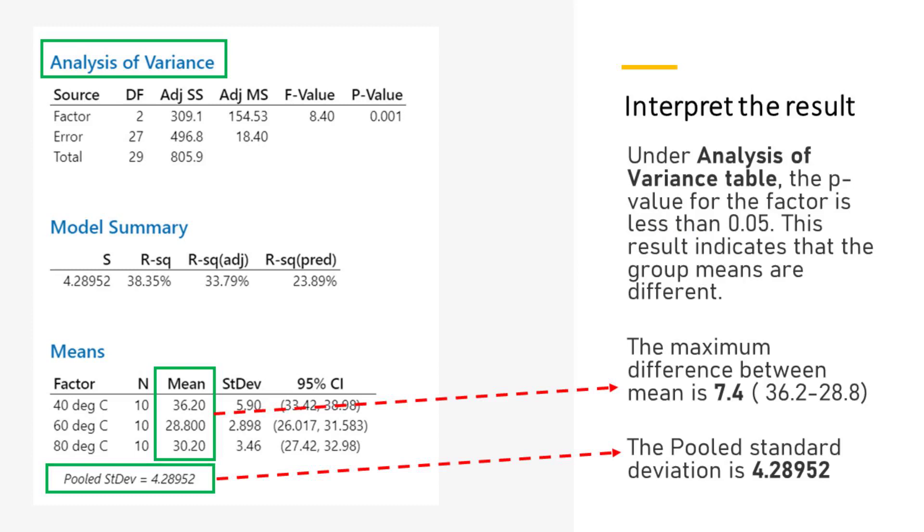Under analysis of variance table, the p-value for the factor is less than 0.05. This result indicates that the group means are different. The maximum difference between mean is 7.4, which is 36.2 minus 28.8. The pooled standard deviation is 4.28952.